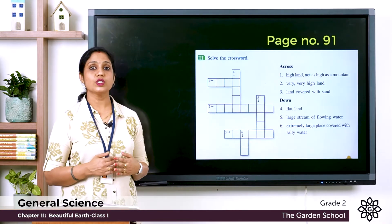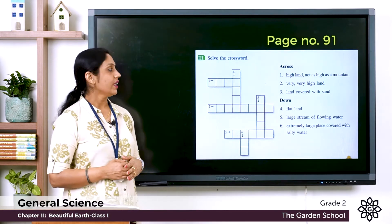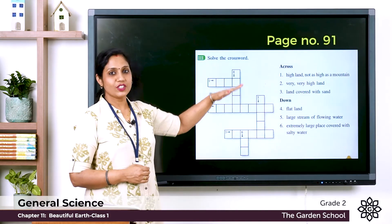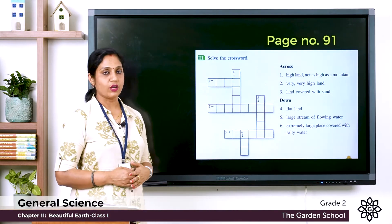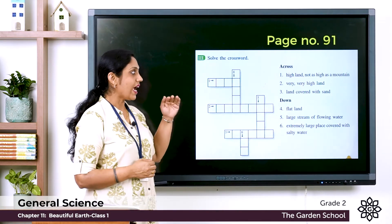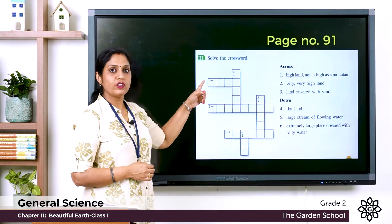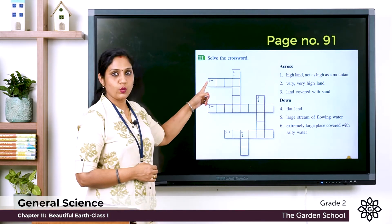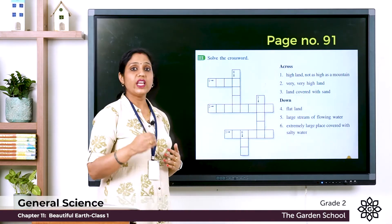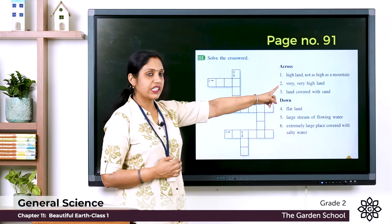Next, let's solve the crossword. 'Across' means to the right side and 'down' means to the bottom. Across number one: high land, not as high as a mountain — the answer is hill. Write H-I-L-L in box number one. Across number two: very very high land — the answer is mountain.